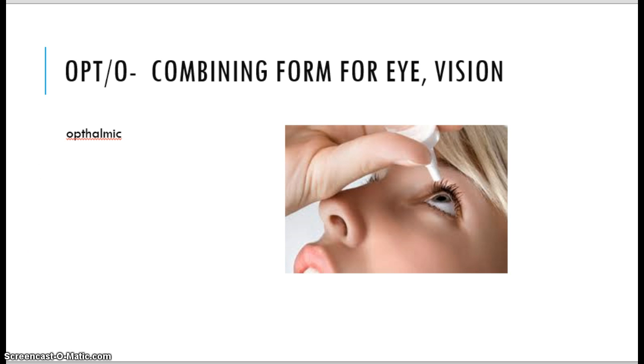Opto is a combining form for eye. So when we have ophthalmic medications, we know that they go into the eye. As you can see, we don't want to drop that medication right onto the eyeball itself. We want to get it into that lower conjunctival sac. An ophthalmic medication always needs to be labeled as ophthalmic or it could damage the eye and the vision if it was not intended for the eye.